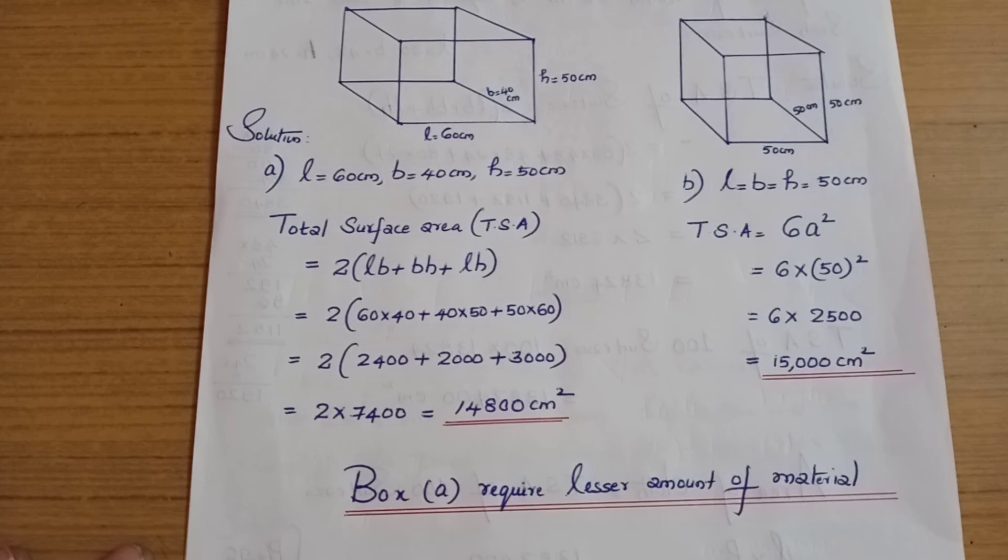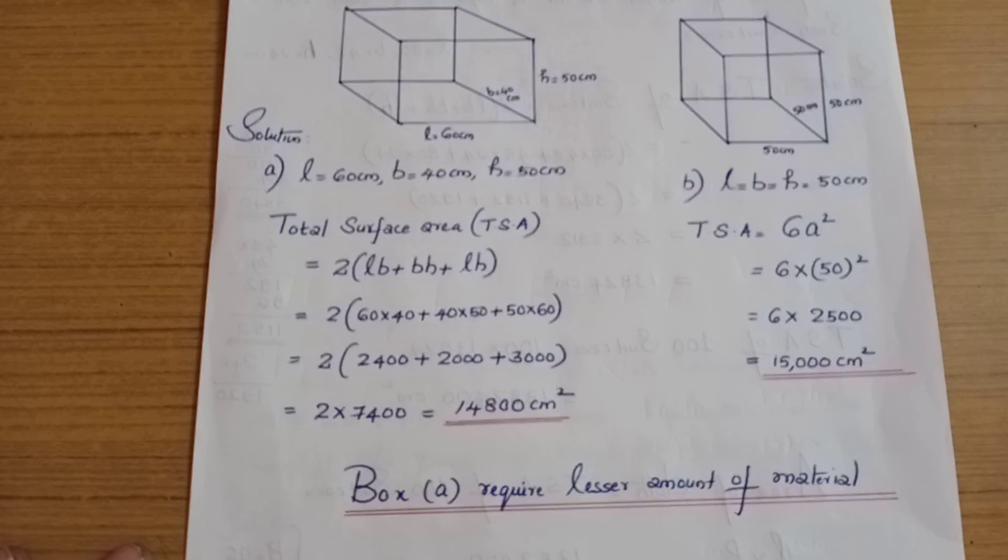14,800 cm squared versus 15,000 cm squared. Box A requires lesser amount of material. Box A is the answer.